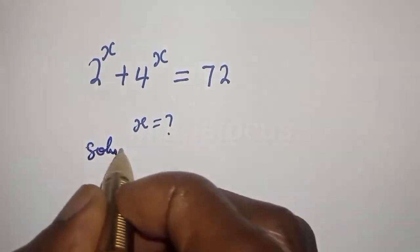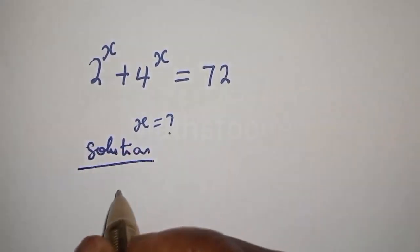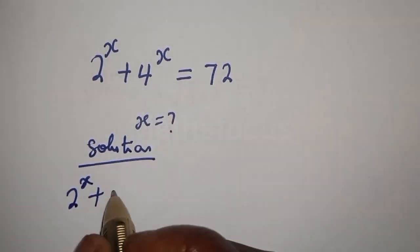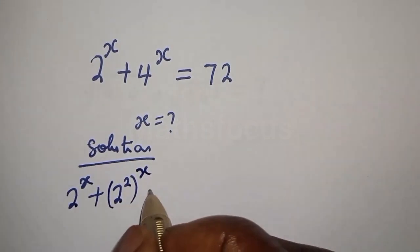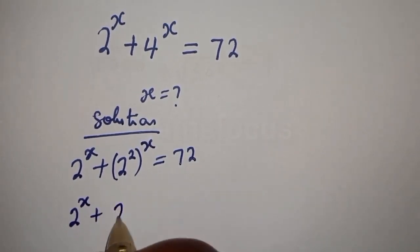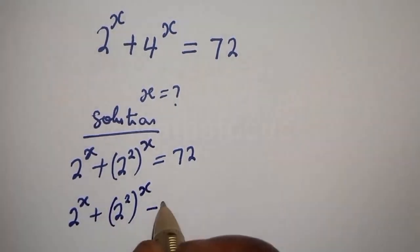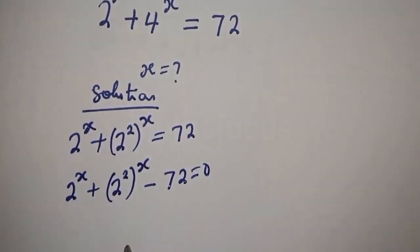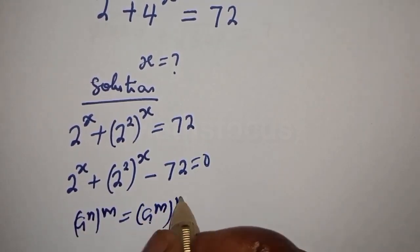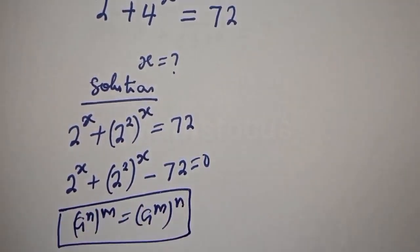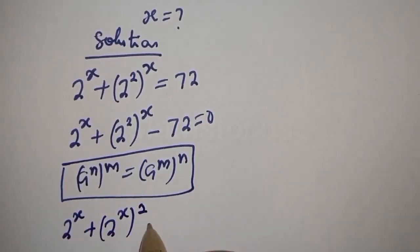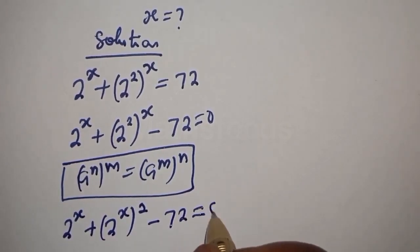Solution. 2 raised to power s plus 4 raised to power s can be written as 2 squared raised to power of s, which is equal to 72. Then, 2 raised to power s plus 2 squared raised to power of s minus 72 is equal to 0. Note that a raised to power n, to the power of m, is equal to a raised to power m to the power of n.